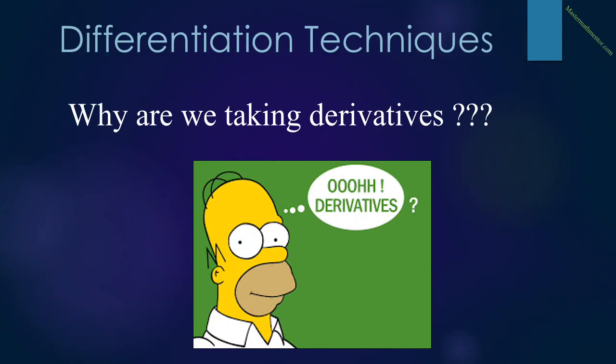At this point in time, you might wonder why this concept of a derivative — which we know is the slope of a tangent line to a curve — is so important that we have an entire math course based on it. Later, we're going to examine applications of the derivative and you will then understand its significance. For now, you need to trust that derivatives are important and we need to learn to take them rather than going through this very cumbersome limit process. So we're going to learn techniques of differentiation, which is the art of taking derivatives.